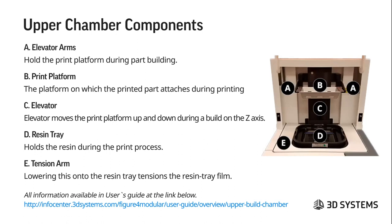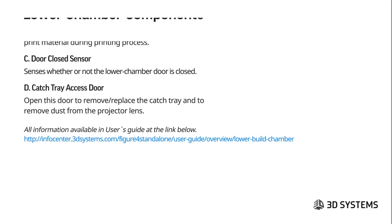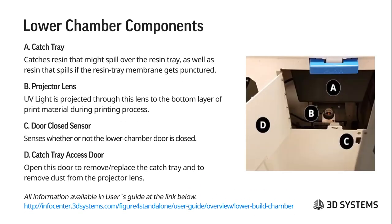The upper chamber components consist of: A — elevator arms, which hold the print platform during part building; B — the print platform on which the printed part attaches during printing; C — the elevator, which moves the print platform up and down during the build on the z-axis; D — the resin tray, which holds the resin during the print process; and E — the tension arm on the standalone system, which tensions the resin tray film by lowering onto the tray. The modular system uses a different pneumatic tensioning system.